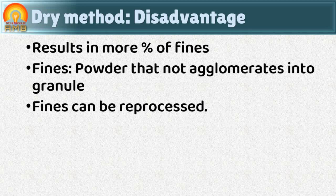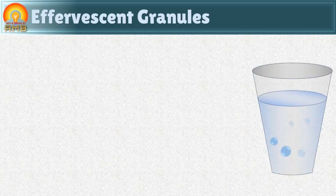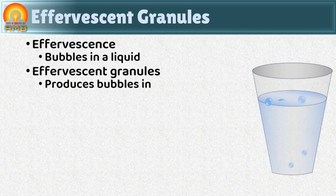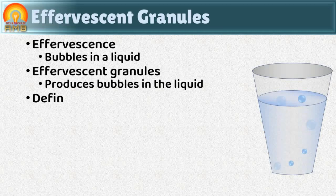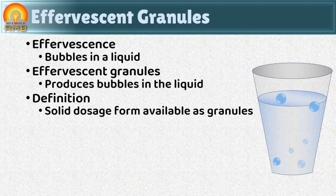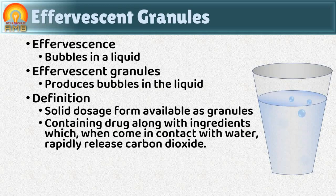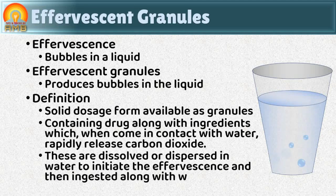Now we will discuss effervescent granules. Effervescence means bubbles in a liquid, and these granules produce bubbles when dispersed in water. Effervescent granules are defined as solid dosage forms available as granules containing drug along with ingredients which, when they come in contact with water, rapidly release carbon dioxide. They are dissolved or dispersed in water to initiate the effervescence and then ingested along with water.